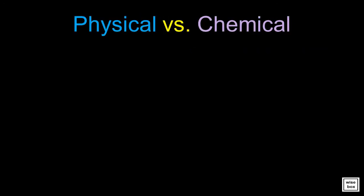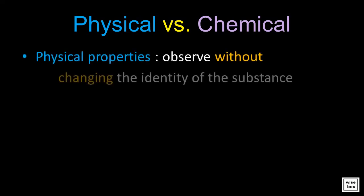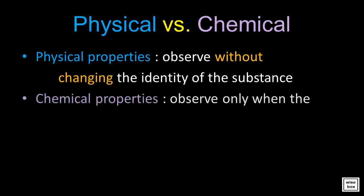Let's have a quick review. Physical properties can be observed without changing the identity of the substance, while chemical properties can be observed only when the identity changes.